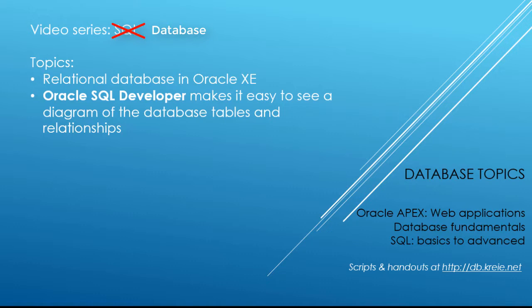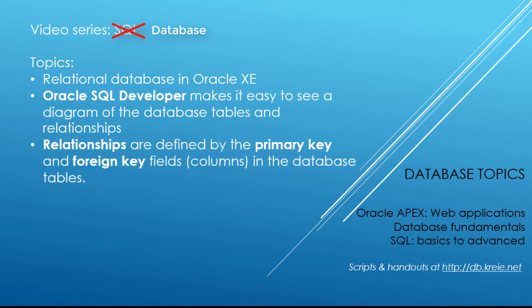We can then save that as a PDF if we want to document what we would call the data model — how the data tables are defined and the relationships between those tables. Relationships are defined based on primary key and foreign key fields. In the next couple of videos, I'll talk a lot about primary key and foreign key fields. They are a cornerstone to a valid, functioning relational database.